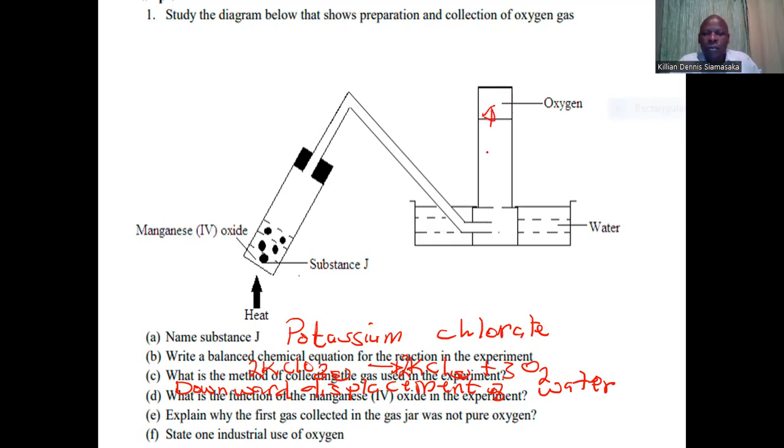What is the purpose of manganese IV oxide? It's actually a catalyst, meaning that it lowers the activation energy.